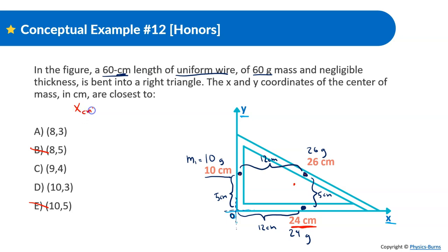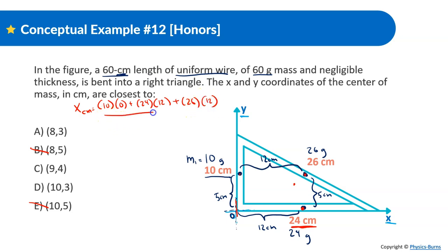Let's solve mathematically. For the x-direction center of mass: m1 is 10 grams at x = 0; m2 is 24 grams at x = 12 centimeters; m3 is 26 grams at x = 12 centimeters. Center of mass in x = (10×0 + 24×12 + 26×12) / 60 = (288 + 312) / 60 = 600/60 = 10 centimeters.